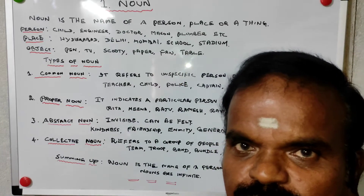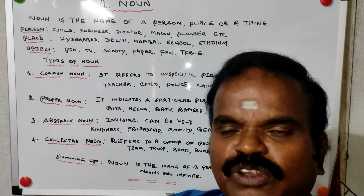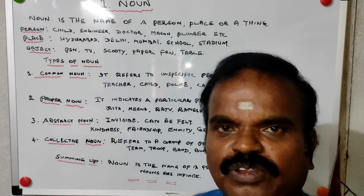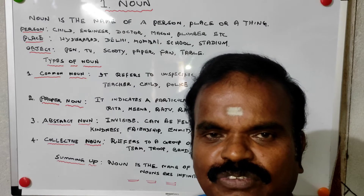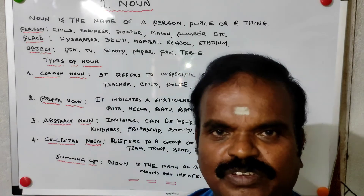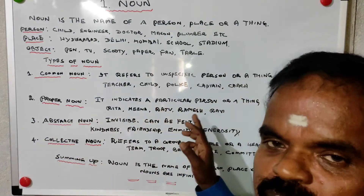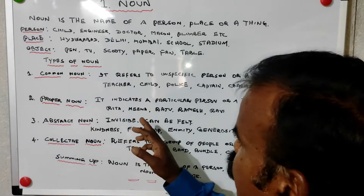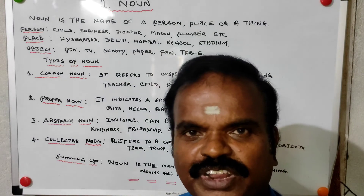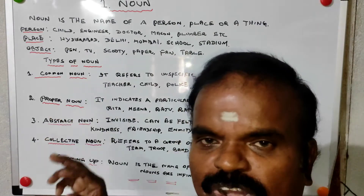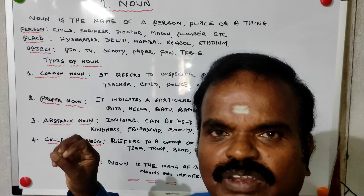Proper noun is just the opposite of common noun — it is specific and particular. For example: Meena, Rita, Raju, Ramesh, Ravi. These indicate a particular person or thing. So proper noun means particular, while common noun means unspecific.